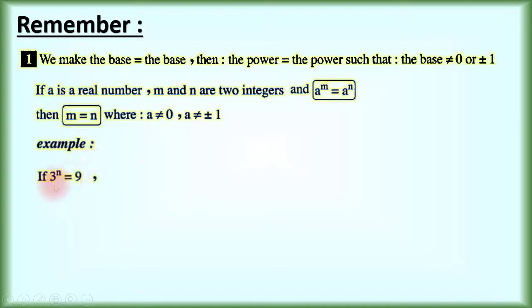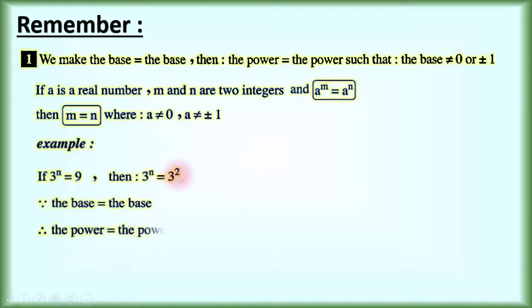Example: if we have 3 power n equal 9, and we know that 9 is 3 power 2. Since the bases are equal, therefore the powers are equal, then n equals 2.